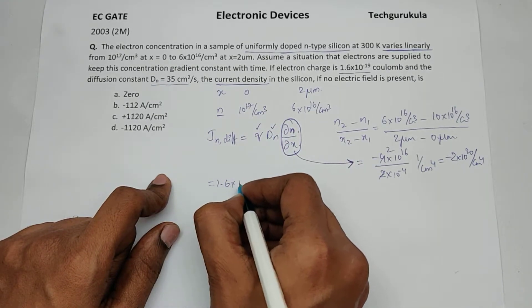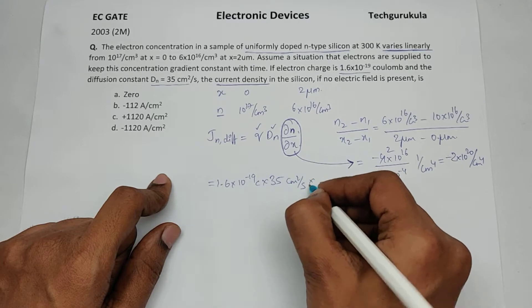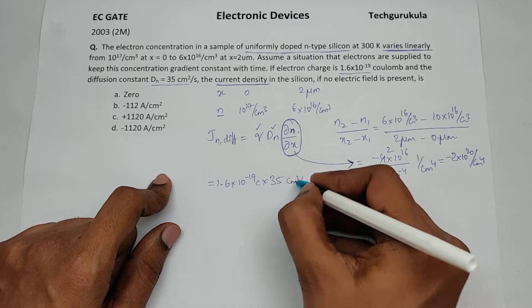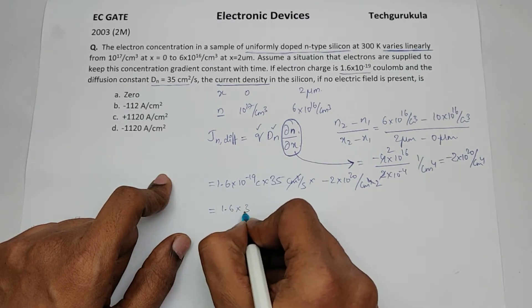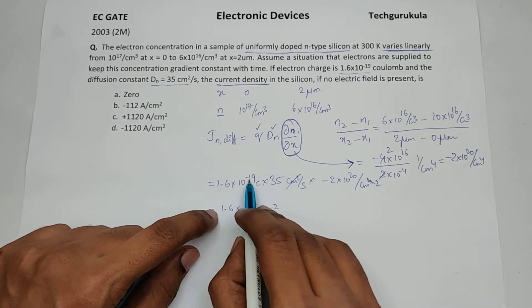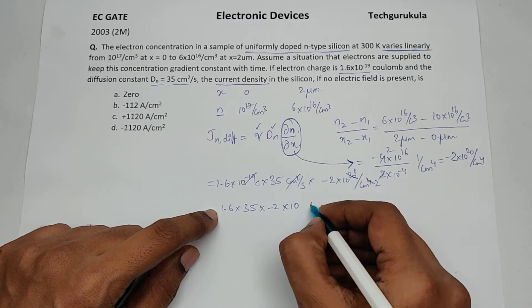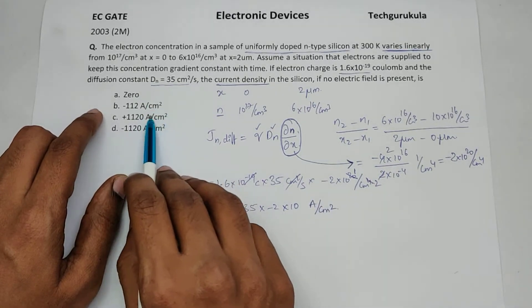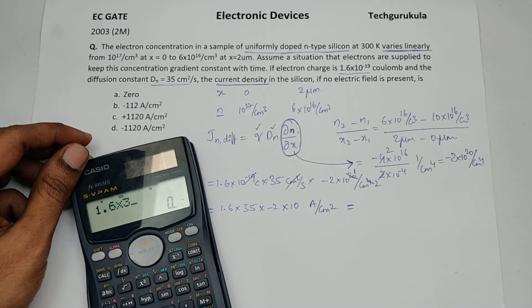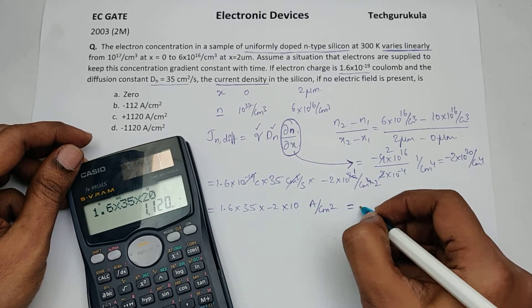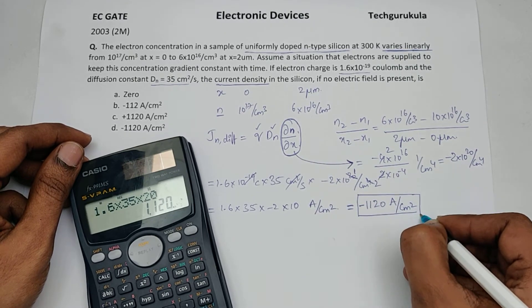Let us find out the equivalent value which is 1.6 times 10^-19 coulombs times D_n 35 cm² per second times minus 2 times 10^20 per cm^4. This gives 1.6 times 35 times minus 2 times 10^1 amperes per cm². This value is minus 1120 amperes per cm². So the answer is option D.